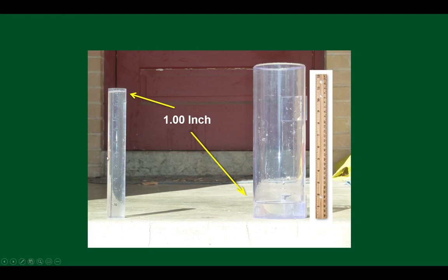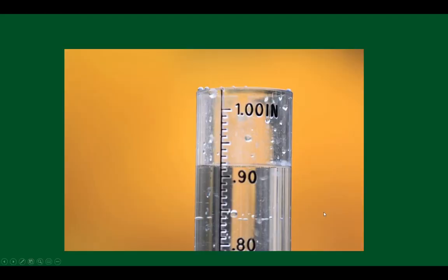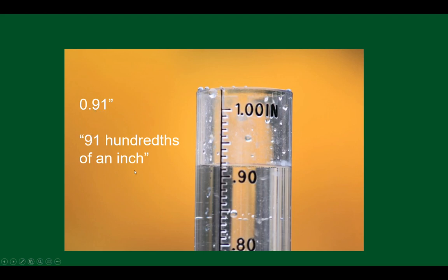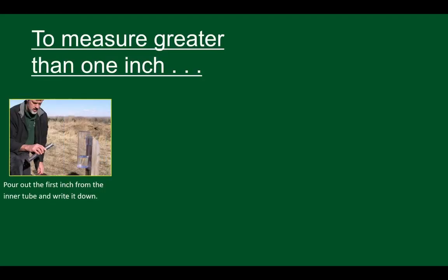Three quarters of an inch would be right around 75. The key is to be accurate to the nearest hundredth of an inch. If I poured water into the inner tube and it lined up with a particular line, how would you write it in decimal form? We'd write down 0.91, or say '91 hundredths of an inch.'